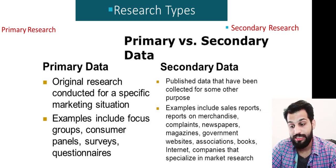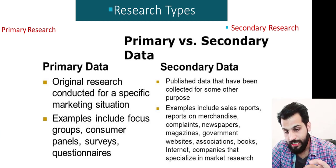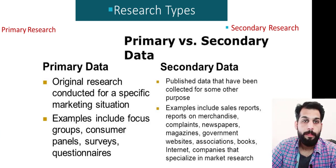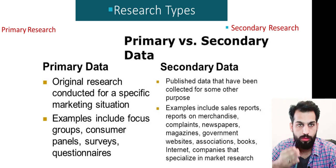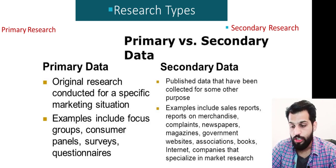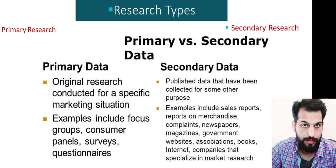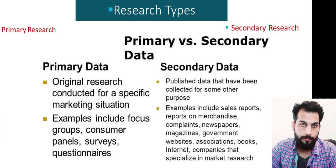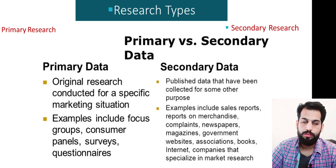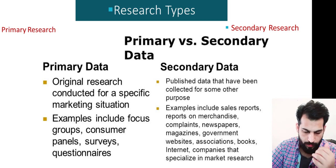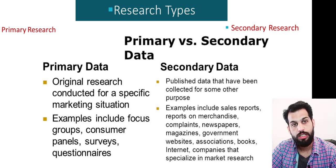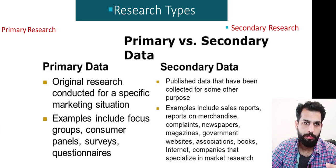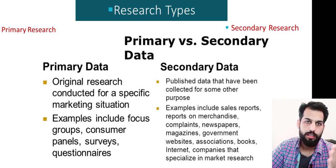Examples of secondary data include sales reports, merchandise complaints, newspapers, magazines, government websites, associations, books, the internet, and companies that specialize in market research. All these are secondary sources of information. There are even more things that could be added to this list, but we're keeping our scope limited and to the point as long as it helps us in Global Perspectives.